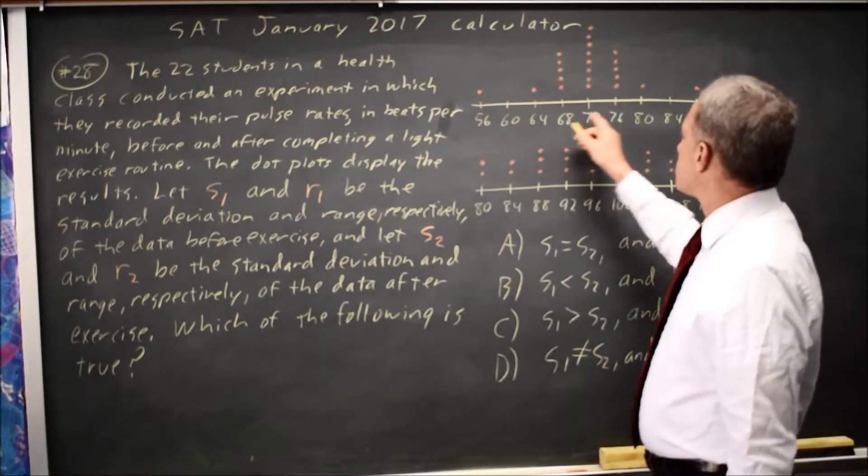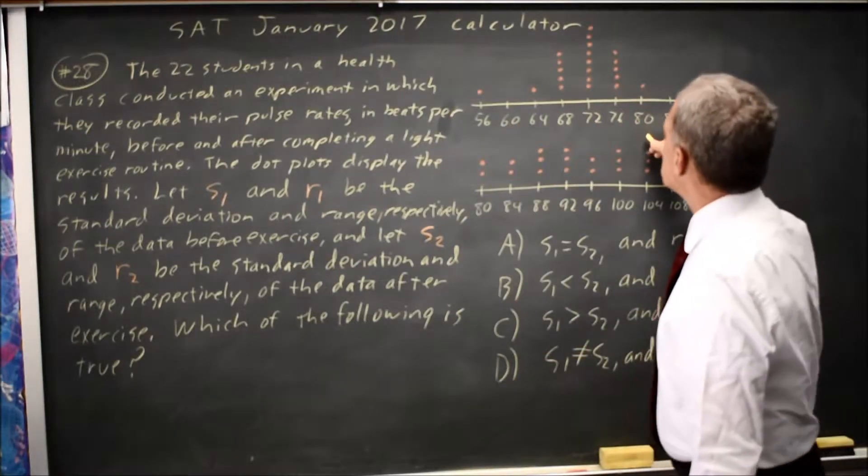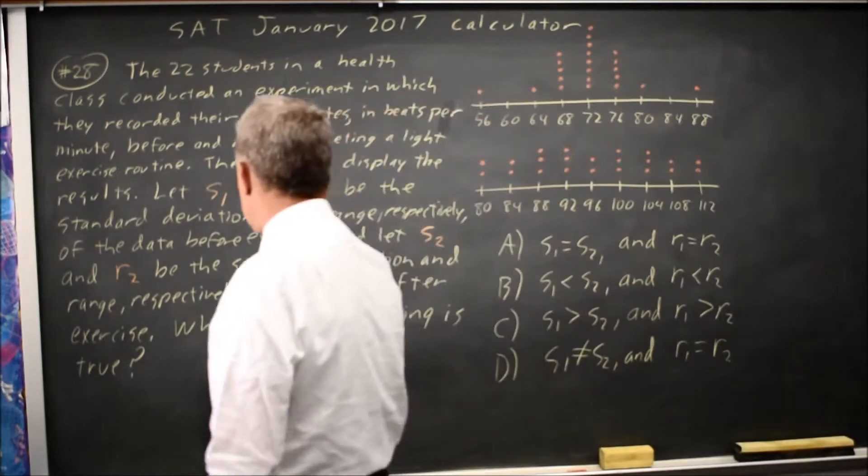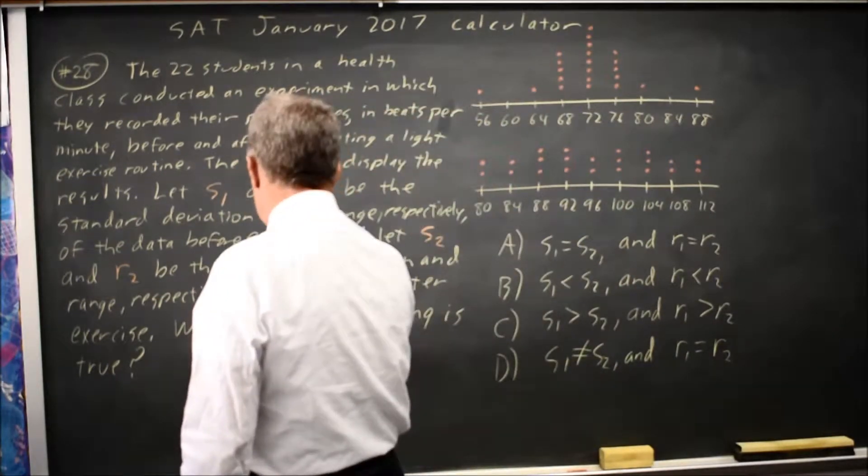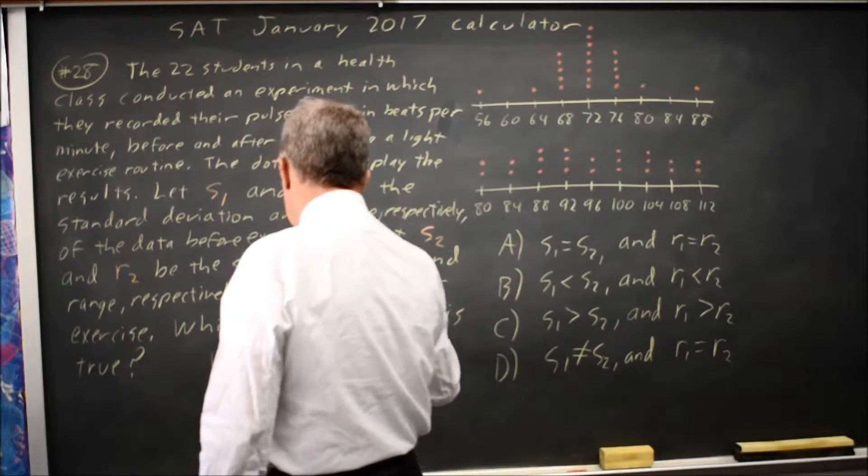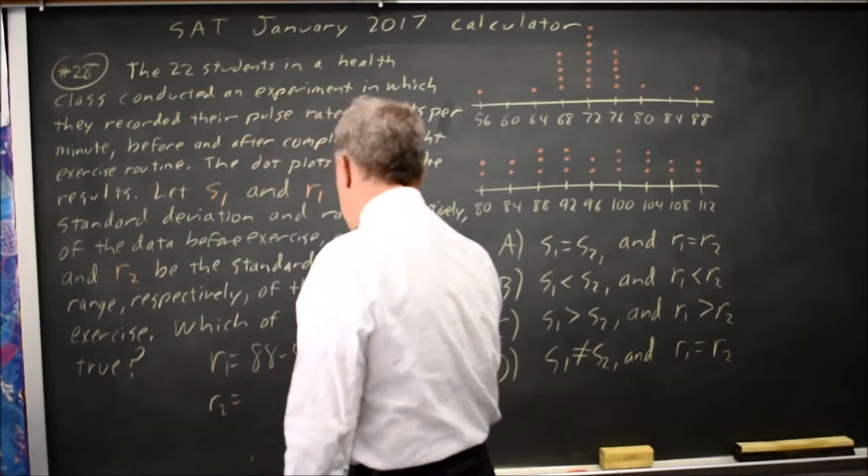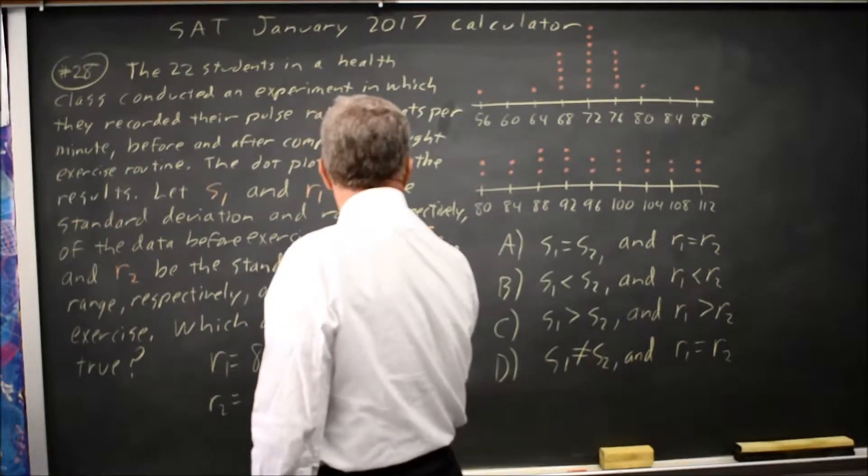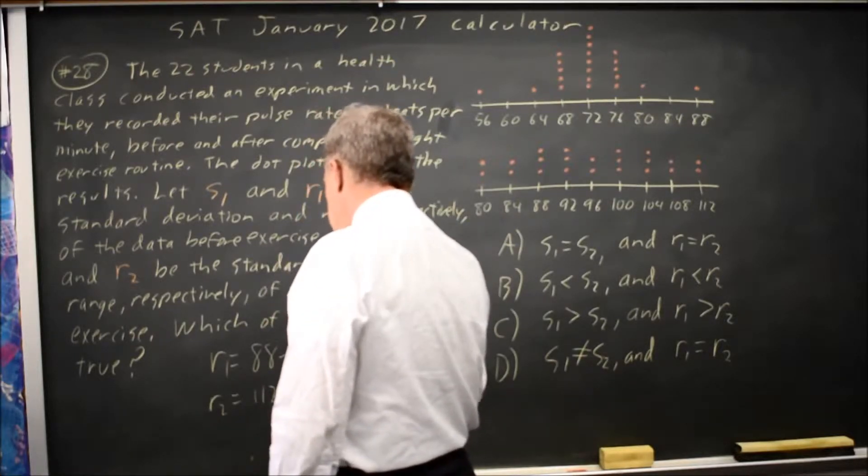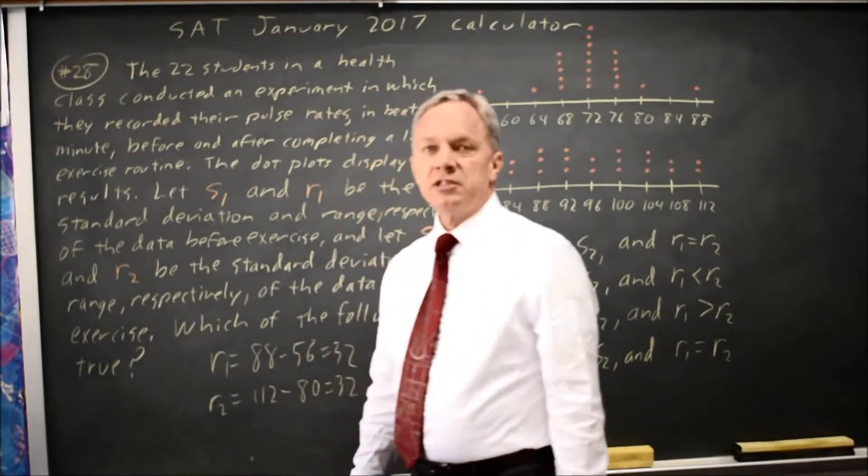The range is the difference between the maximum and the minimum, so R1 is 88 minus 56, which is 32. R2, maximum minus minimum, is 112 minus 80, is also 32.